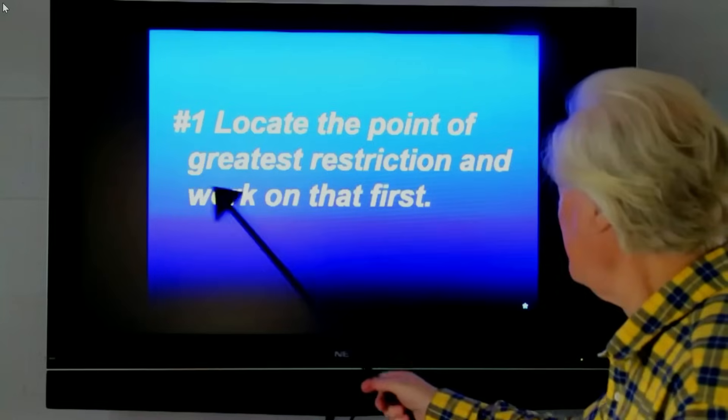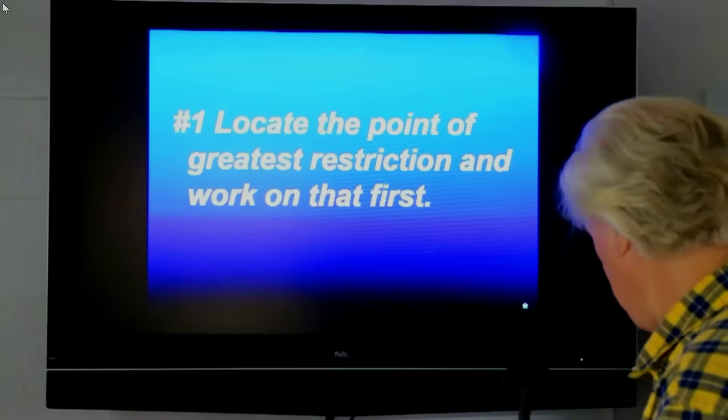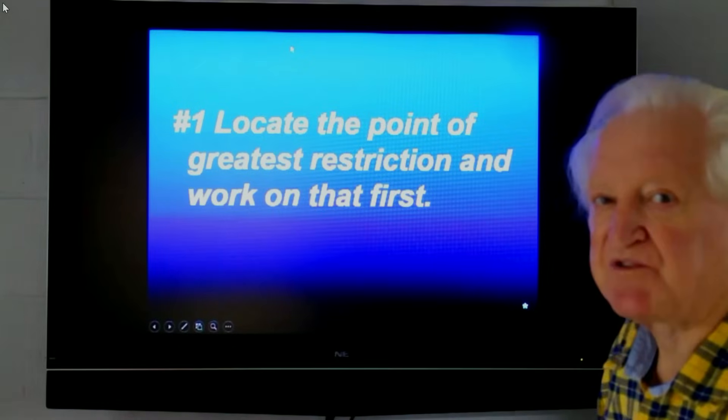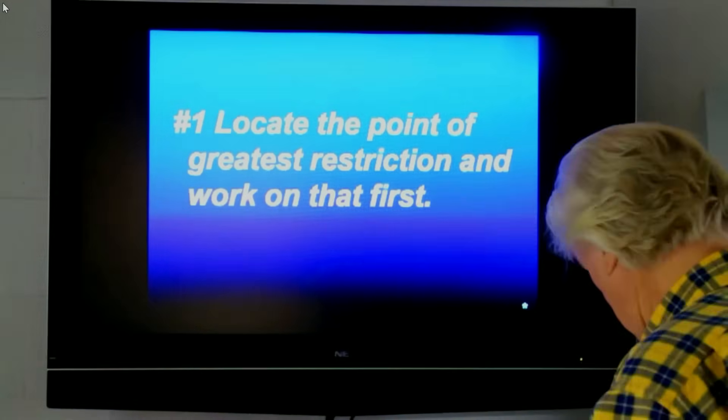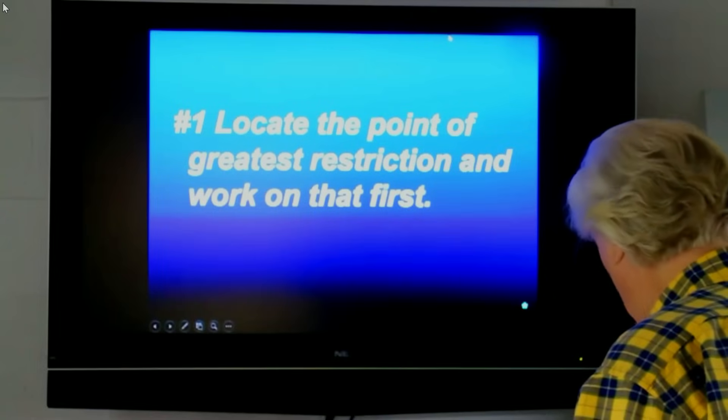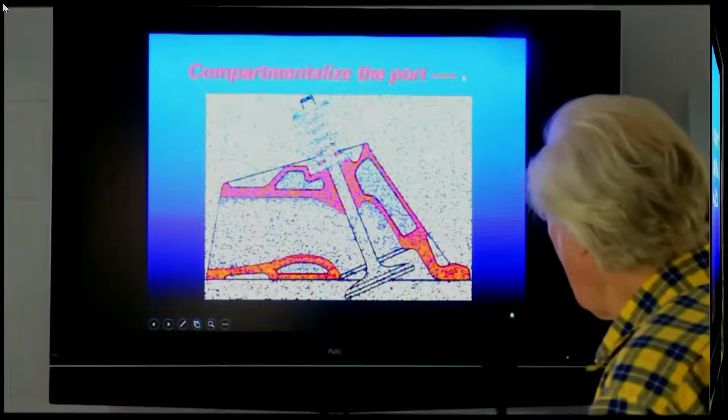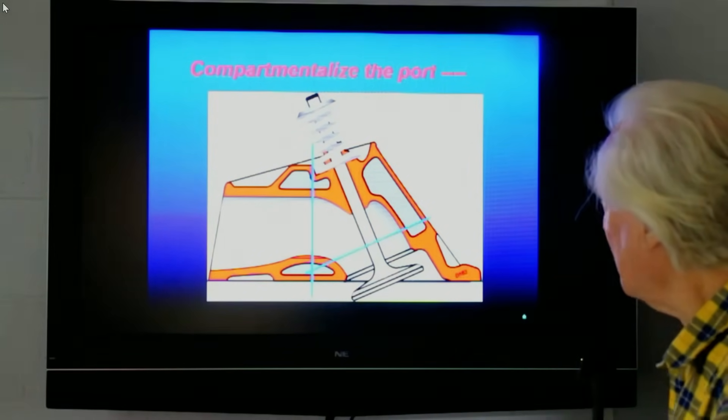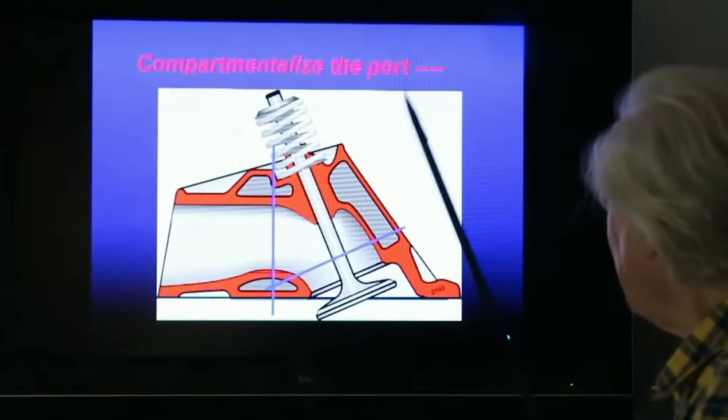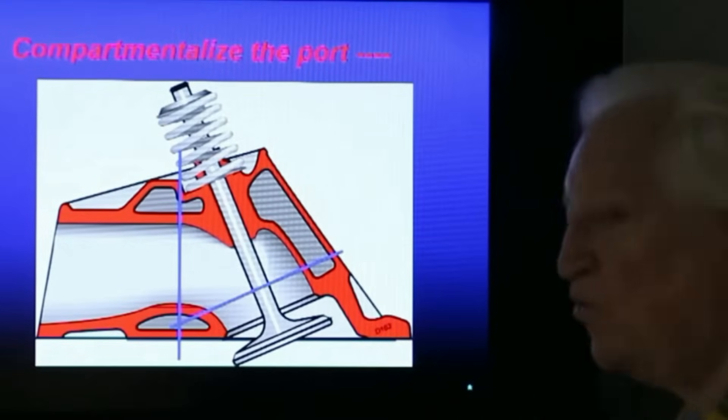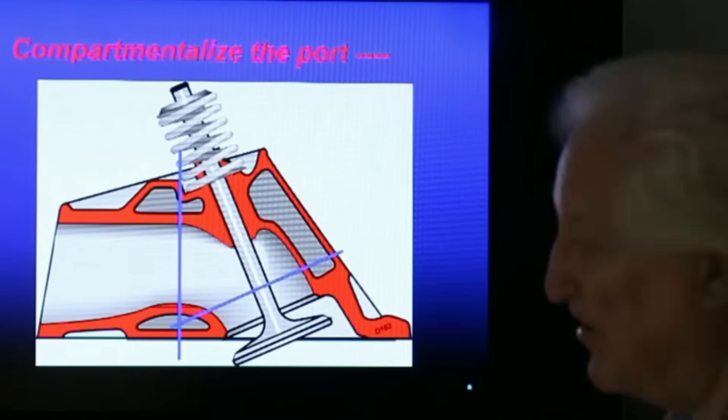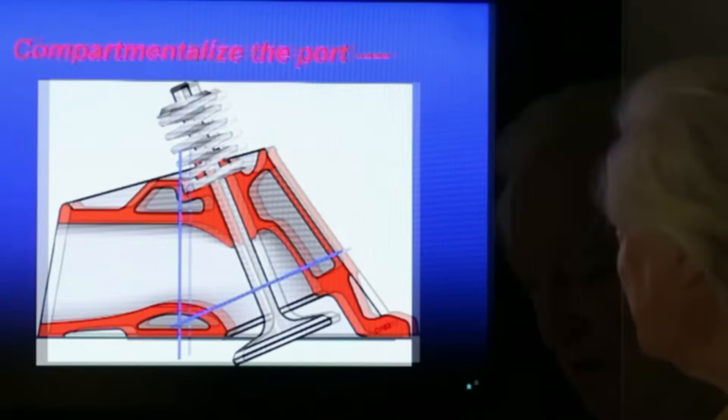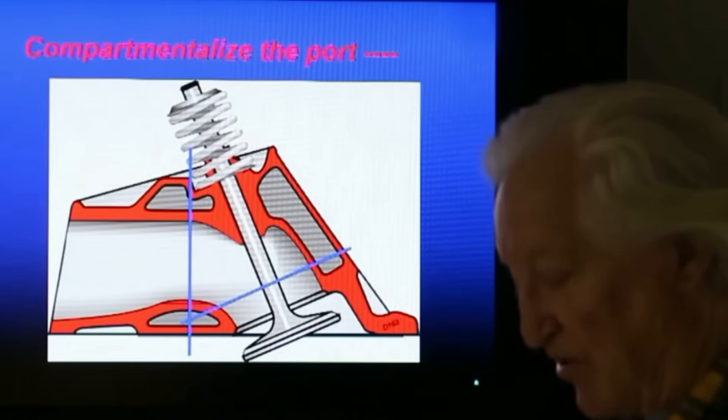Here is our starting point. Locate that most resistive point to flow and work from there. What we're going to do is compartmentalize the port. Now this is a real cylinder head here. This is a cross-section of a 186 Chevy, small block Chevy Casting.